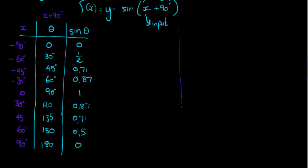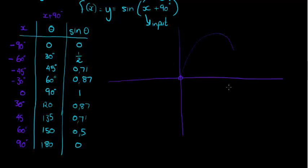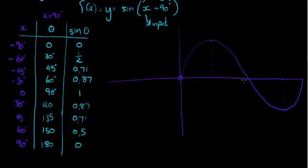Let's go and draw that. Here is the original graph — just sine of x — where I reach my maximum at 90°, I'm back at the x-axis at 180°, I reach my minimum at 270°, and at 360° I've completed my cycle. The same thing happens on the negative side in the opposite direction.